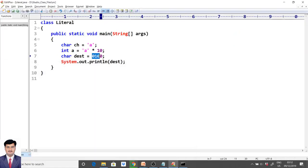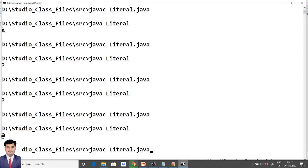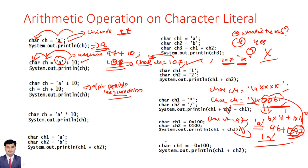One more important point: we cannot assign a negative integer constant to char data type. The reason is — can we have minus 'a', minus 'b', minus 'z', minus '*', minus '%'? No, it is not possible. Hence only the positive range is applicable for character data type. Assigning a negative value gives a possible lossy conversion error because of the negative range, which char does not accept.